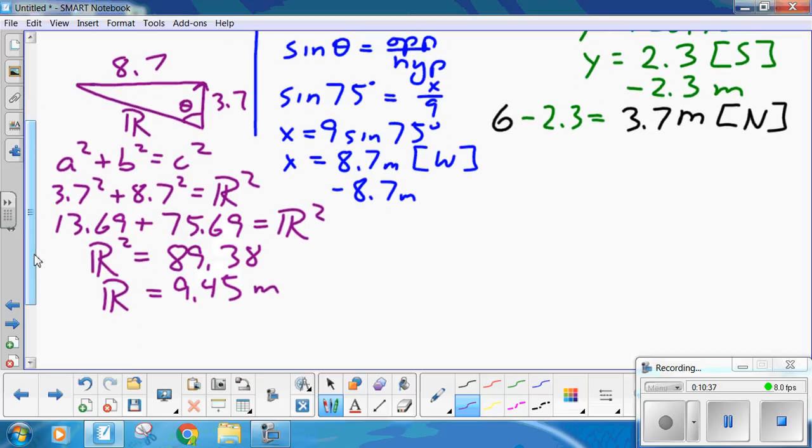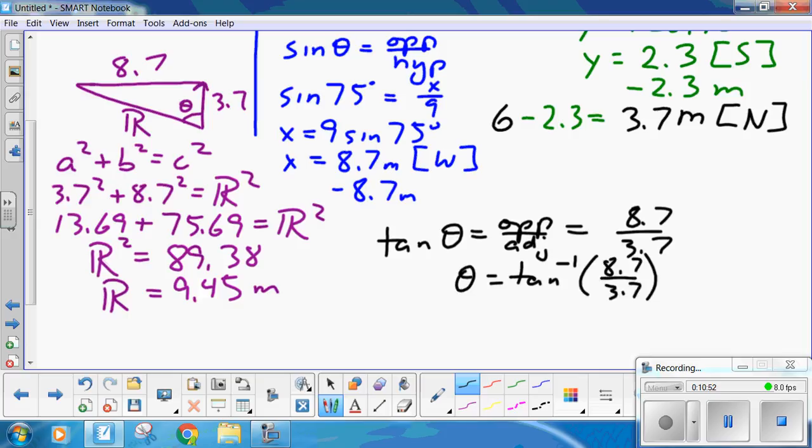Now, the angle, tan of theta is opposite for adjacent, which is 8.7 over 3.7. 66.96 or 67 degrees. So, this is 67 degrees. Now, direction, that is, you're going north, and then you swing west. So, it's north of west.